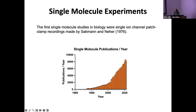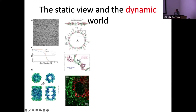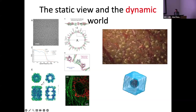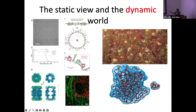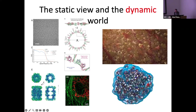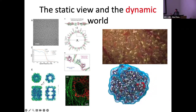The first single molecule experiments were by Sakmann and Neher — these were patch clamp experiments back in 1976, for which they went on to win the Nobel Prize. Since then, numbers have gone up a lot and most years now there are around 10,000 papers per year. There are lots of different types of single molecule experiments — some are imaging, some are mechanical. We see cryo-EM structures, crystallographic structures, and super-resolution structures — all amazing, but these are static snapshots. In the real world there's Brownian motion, molecules are moving very fast, and there are crowding effects.